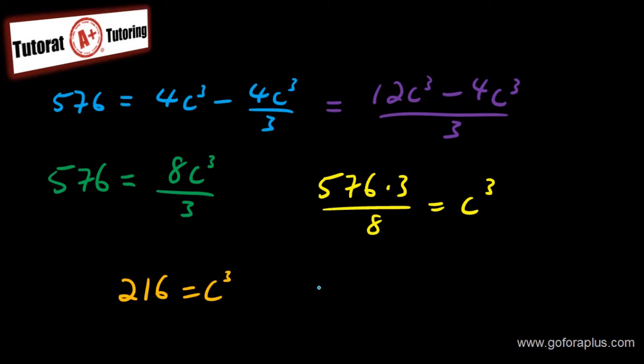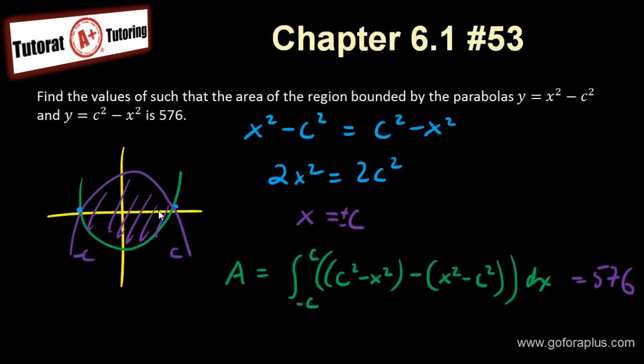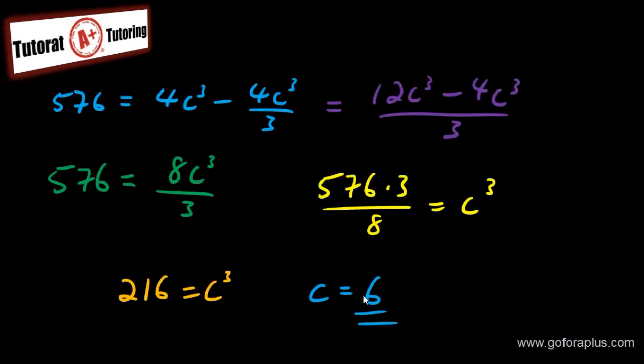This is going to give you 216 equal to c cubed. Now I need to take this cubic root. Cubic root will give you c equal to 6. And this is basically my answer. Note that I have my c equal to 6 and the other one is basically minus 6 here. So on the graph basically is the same thing. So my answer for c is equal to 6.